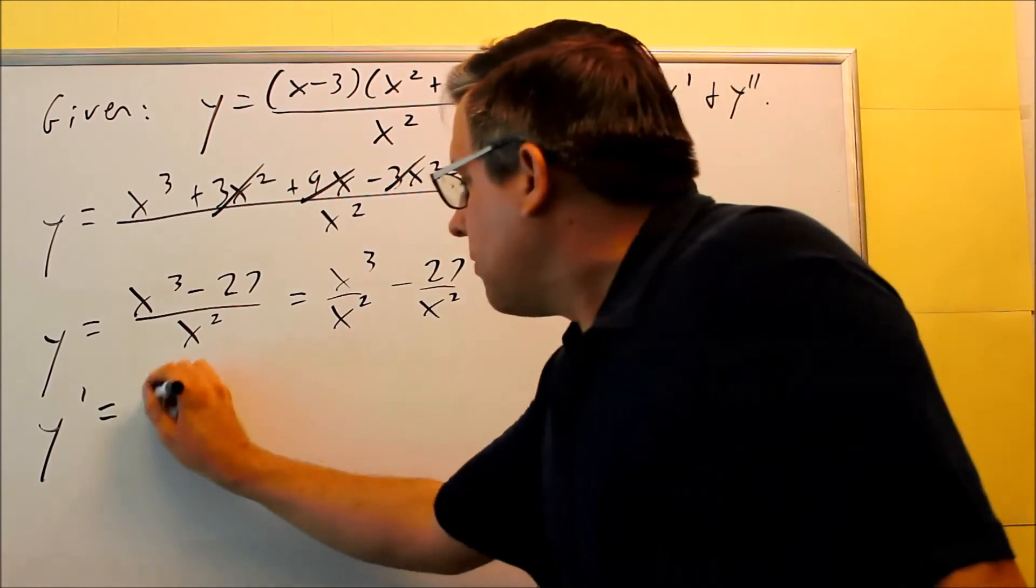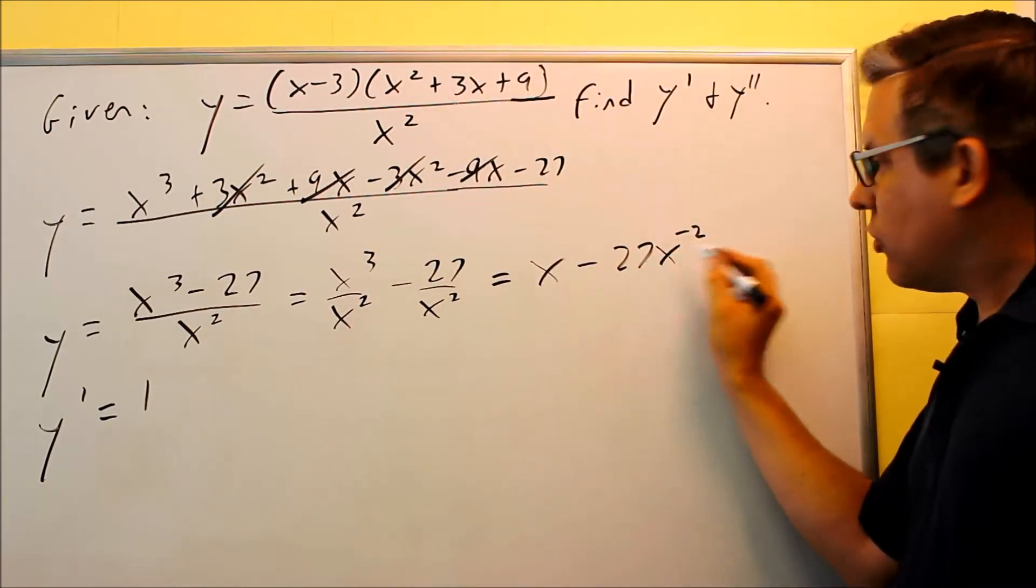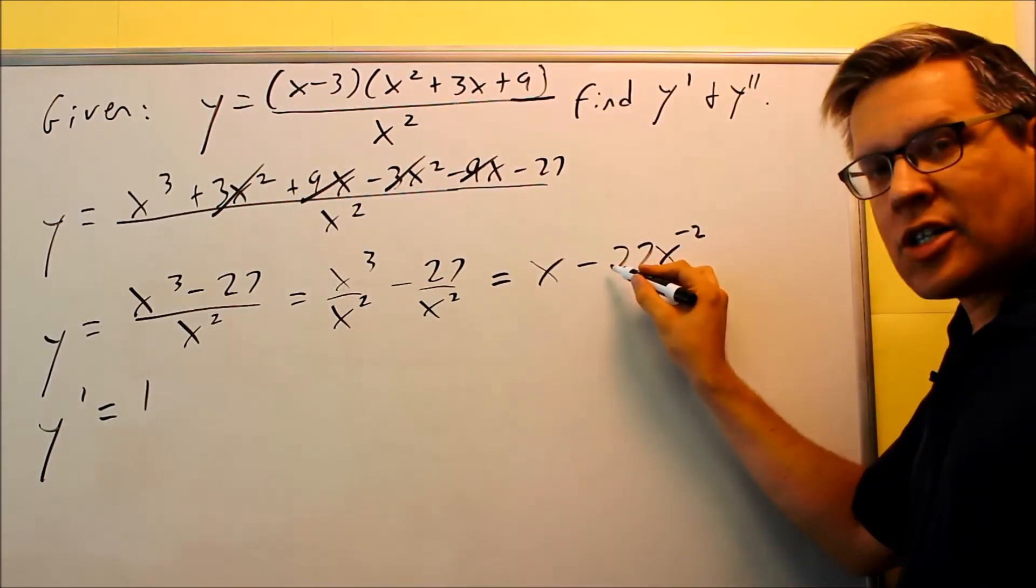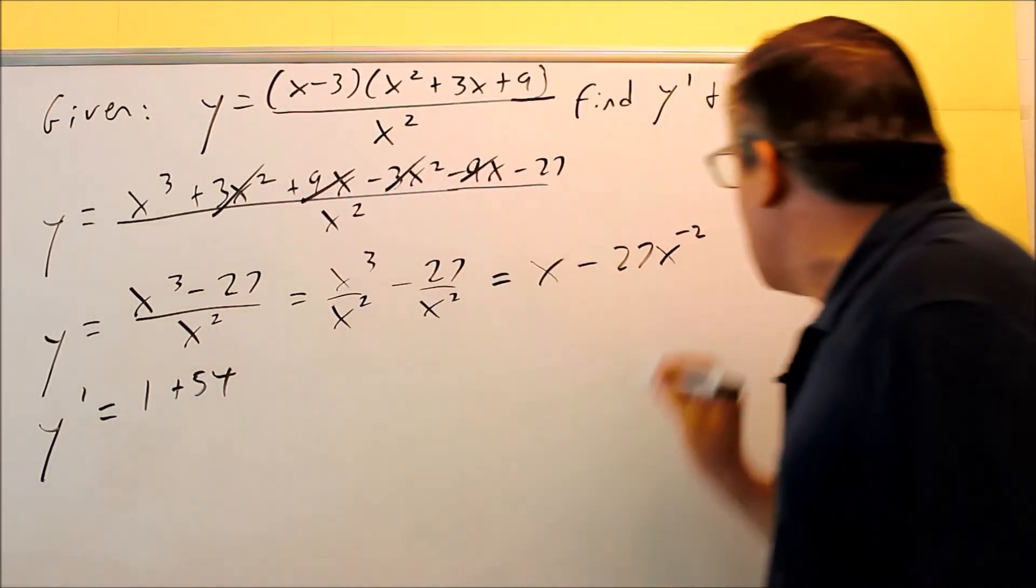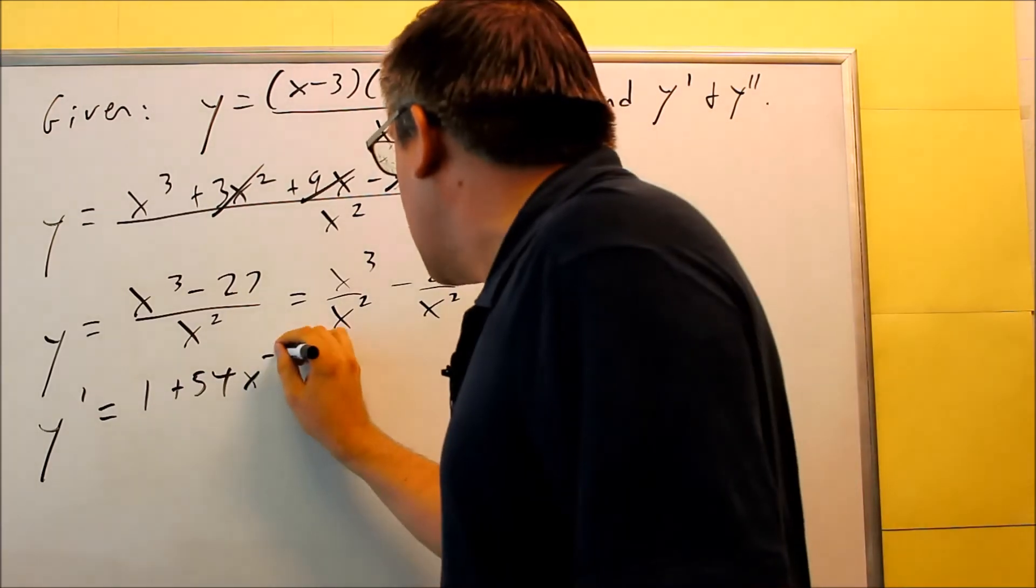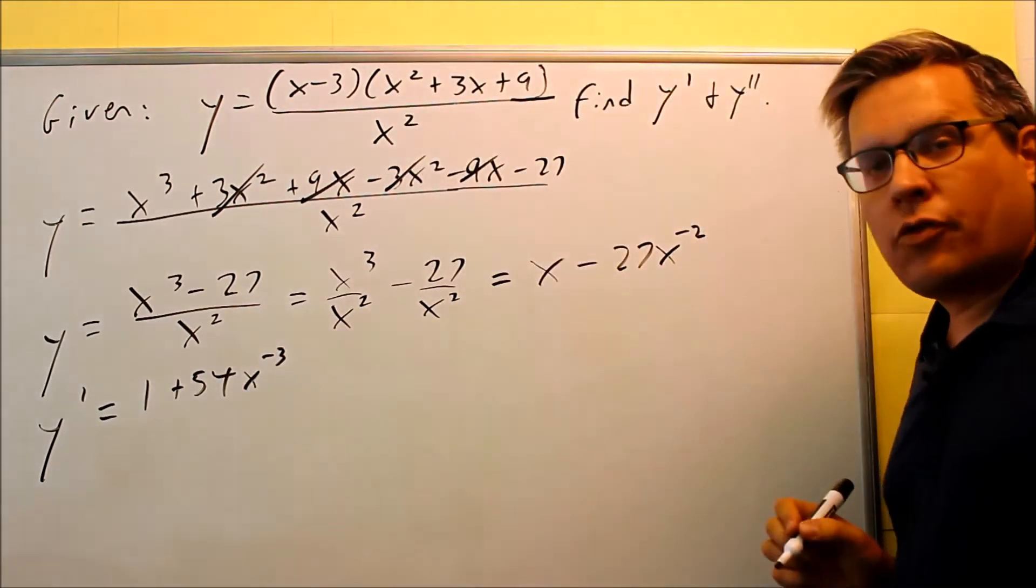Derivative of x is going to be 1. This one I'll use the power rule, negative 2 comes down, multiplies by that, negative 27. So positive 54x to the negative 3, subtract 1 from that power.